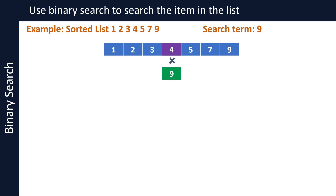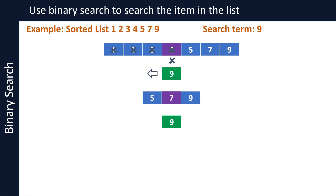Since 4 and 9 do not match, and 9 is bigger than 4, we discard 4 as well as everything that is on the left side of 4. Our new list now is 5, 7, and 9. Compare the middle item in the list, 7, with 9, which is the search term. Since 7 and 9 do not match and 9 is bigger than 7, we discard 7 as well as everything on the left side of 7. Our new list now only has one item which is 9, so we compare 9 with the search term, which is also 9. Since they match, we have found our item in the list.